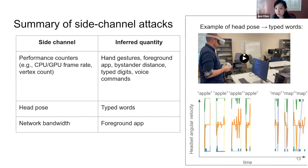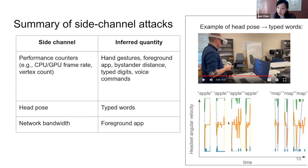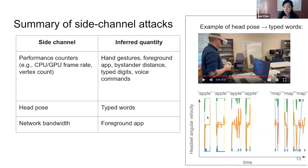Here's an example of the head pose side-channel. As a user types words on their display, they move their head very subtly. A malicious background app can take that head pose information and infer the characters being typed. On this plot, the x-axis is time and the y-axis is the angular velocity reported by the headset. As the user types different words — 'apple' or 'map' — we see different patterns in angular velocity, and we use machine learning to infer words from these time series patterns.